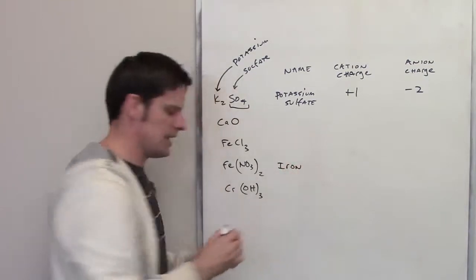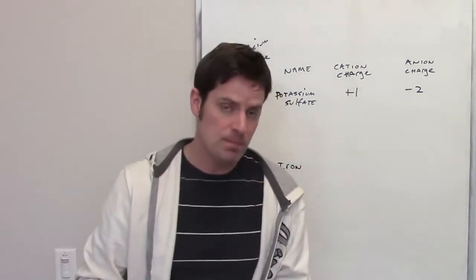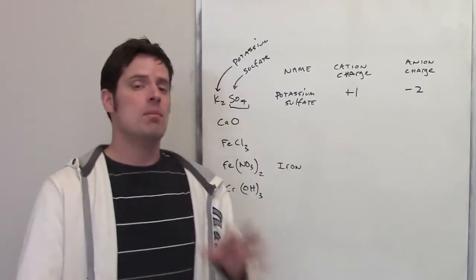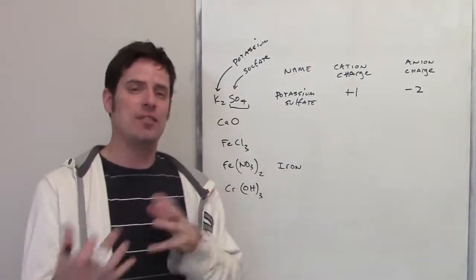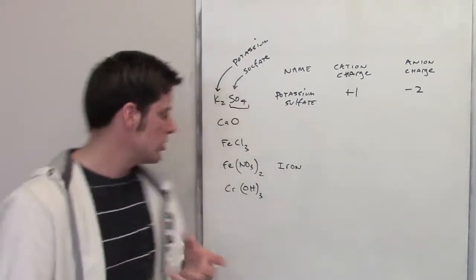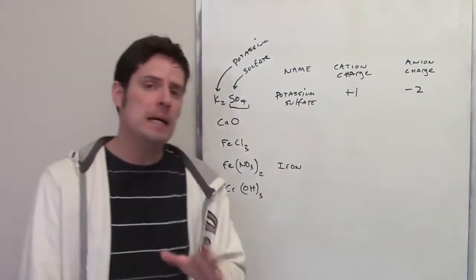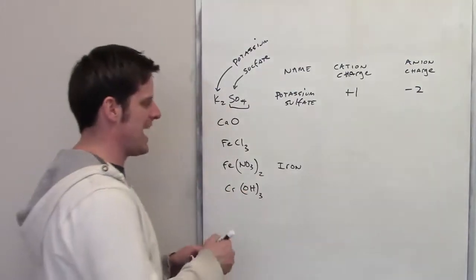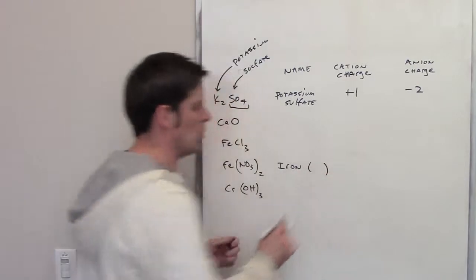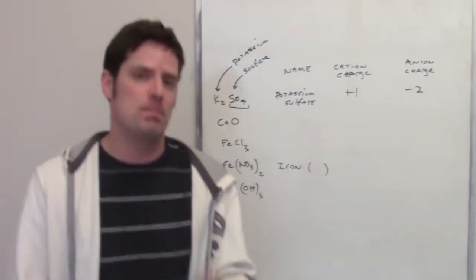Now iron is not in column one or two of the periodic table, therefore it can potentially exist as having multiple different charges in different ionic compounds depending on what the charge is of the anion to which it is bonded. So I'm going to have to put Roman numerals to indicate whatever the charge of this particular iron has to be.